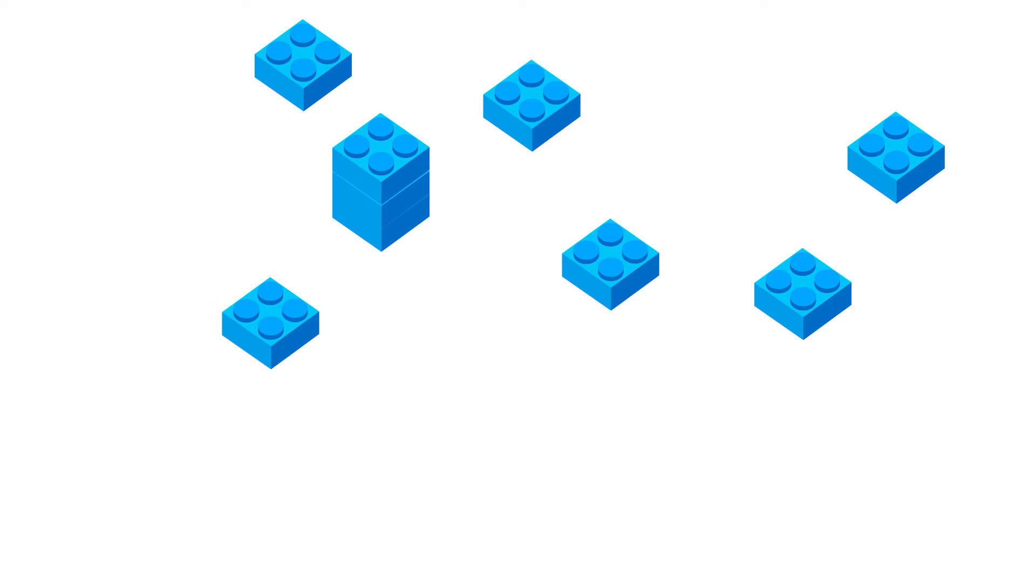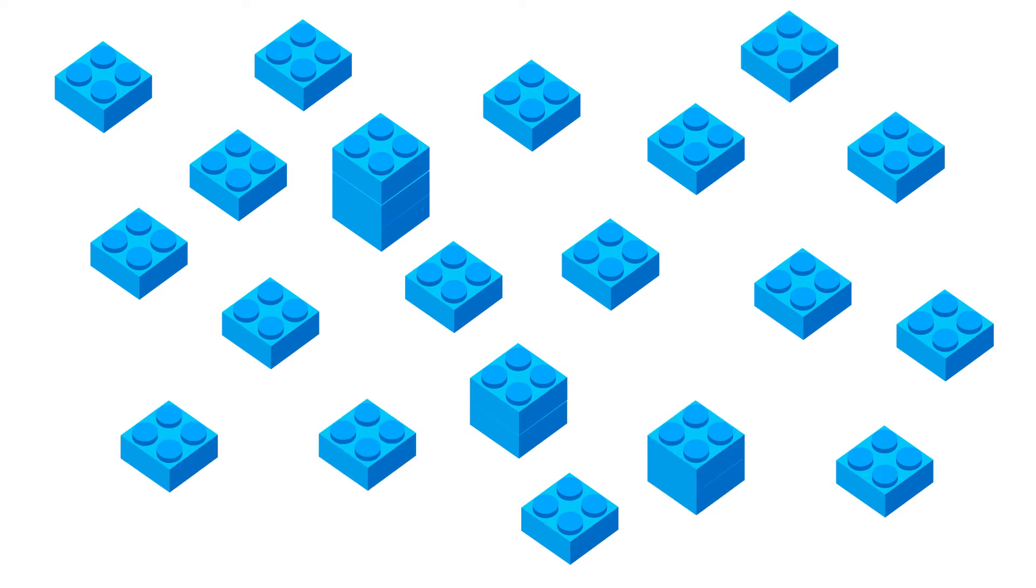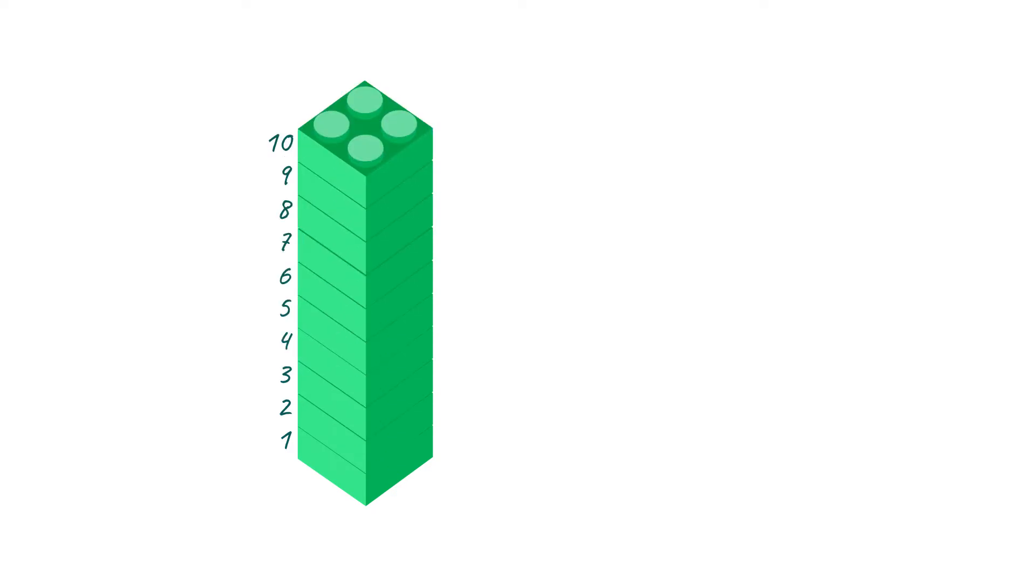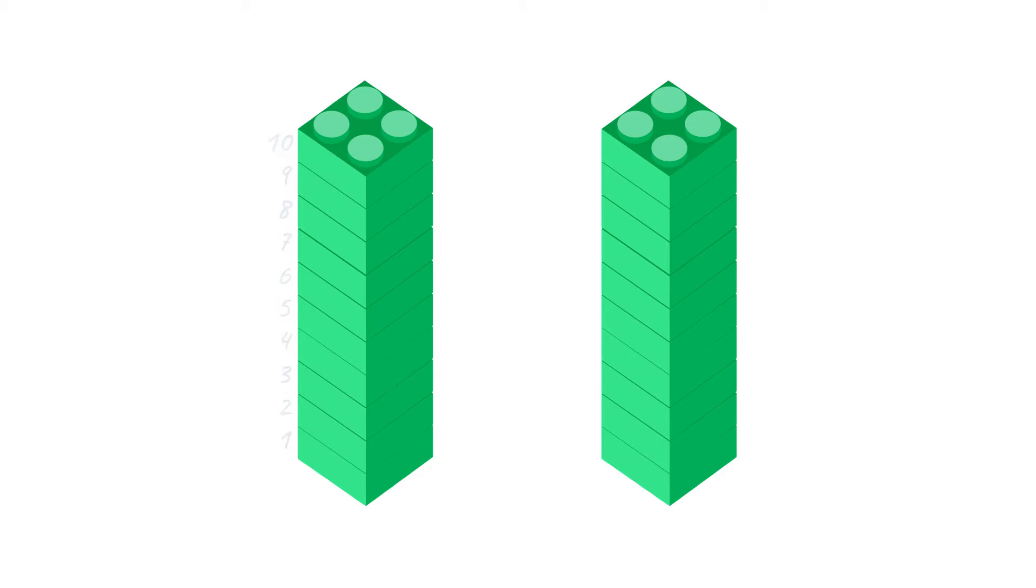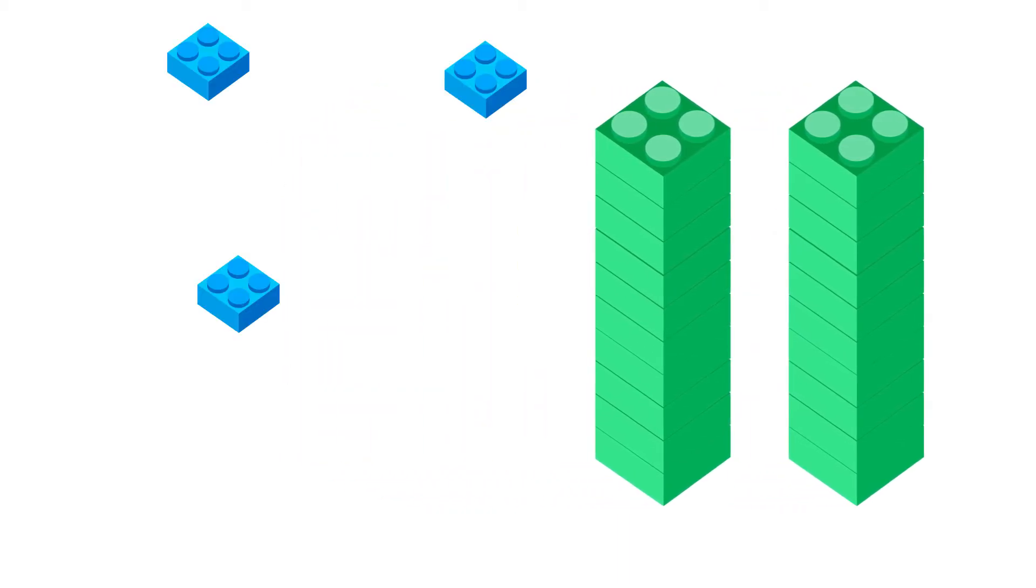But for larger numbers, let's say two digits, it's not that easy to count one by one. But I'll show you a trick. Let's build a rod ten blocks high. We call a block tower like this a rod. Rod, that's easy to remember right?